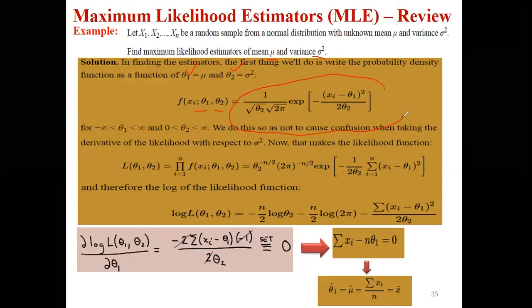We have to form the likelihood function for the normal distribution. Again, substituting x1, x2, up to xn and multiplying them gives the likelihood function. Since the square root of theta 2 term is multiplied n times, when we combine powers during multiplication, the resulting power is minus n over 2. Similarly for the two pi term, the power is minus n over 2.